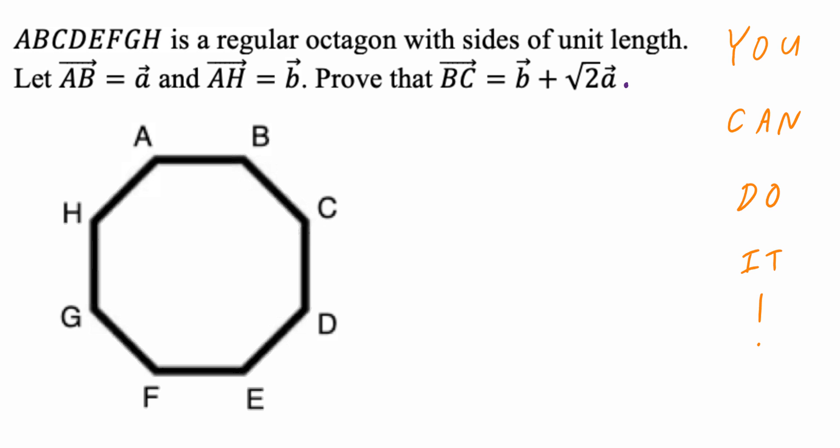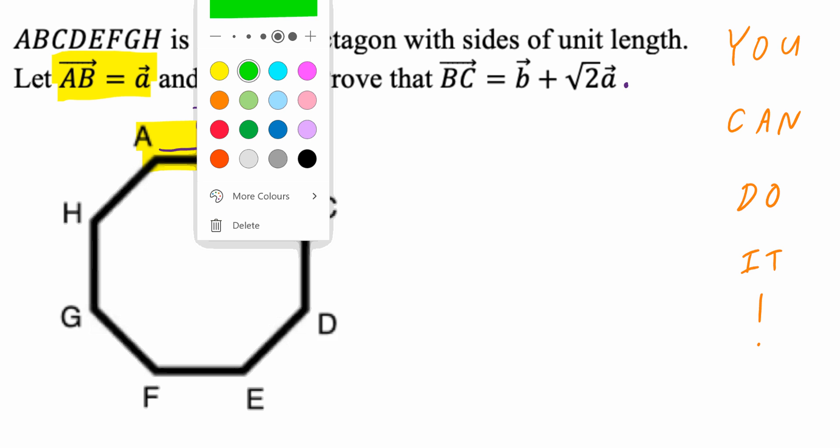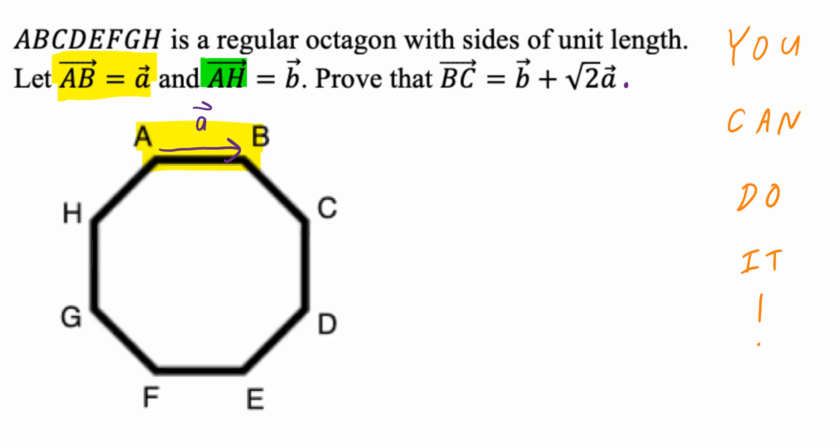Step number 1 from the given, vector AB equals to vector A. So you can draw this vector and name it vector A. Likewise, if you think about this second part, vector AH equals to vector B. So you can draw a vector, vector B.